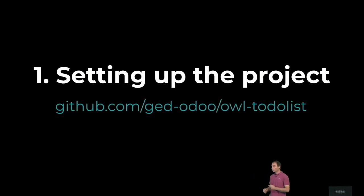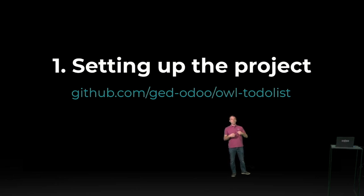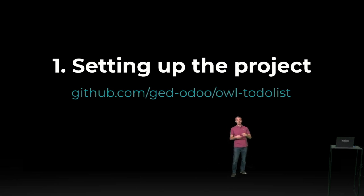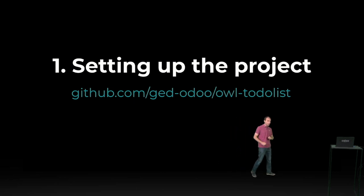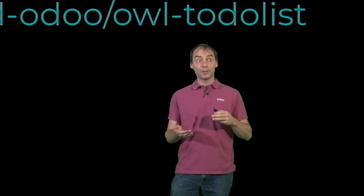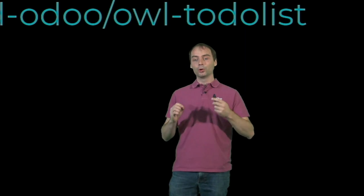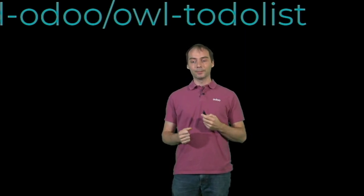First step is setting up the project. Since it really depends on your need — a real project would need extra tools such as a bundler, a server, HTML server, and so on — for our situation, we'll do the simplest OWL project possible: an HTML file, a JavaScript file, a CSS file, and that's it. That way we have a playground to introduce our application.